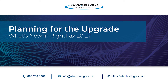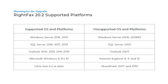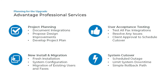Let's talk about planning for the upgrade. As you can see from the slide, RightFax 20.2 now fully supports Windows Server 2019 and no longer supports Windows Server 2008. RightFax 20.2 also fully supports Outlook 2019. The system requirements for RightFax can be downloaded from the Advantage Technologies website.